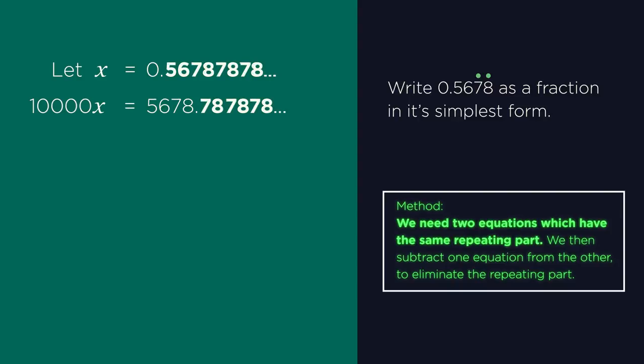But our decimals don't match up. If we subtract, they won't eliminate. So we need to multiply also by one hundred to match up the decimal places. So one hundred x equals 56.787878 recurring. And now our repeating parts match up so we can eliminate the decimal places.